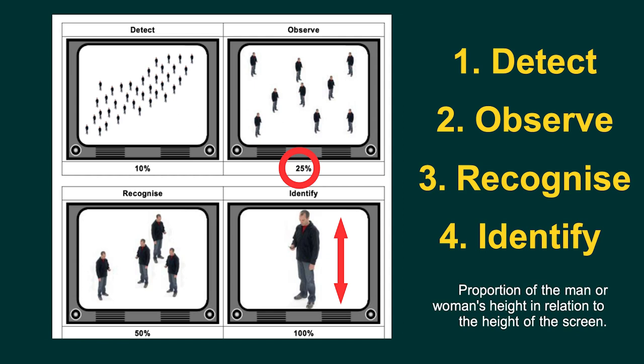This page gives four examples: detect, observe, recognize, and identify. How they've determined this is the proportion of the height of the individual in relation to the length of the display on the monitor. So if we look at detect it's about 10%, and when we go to identify we're at 100%.